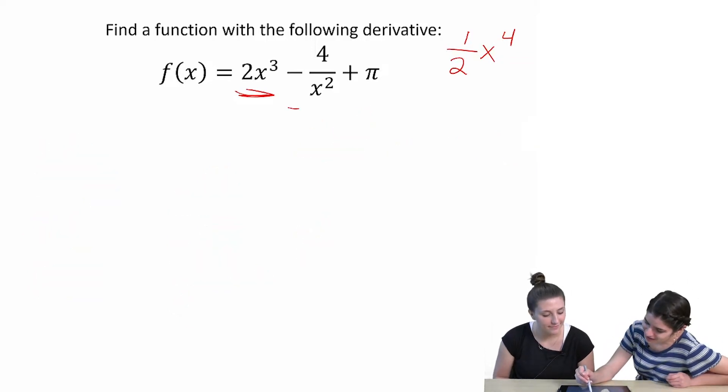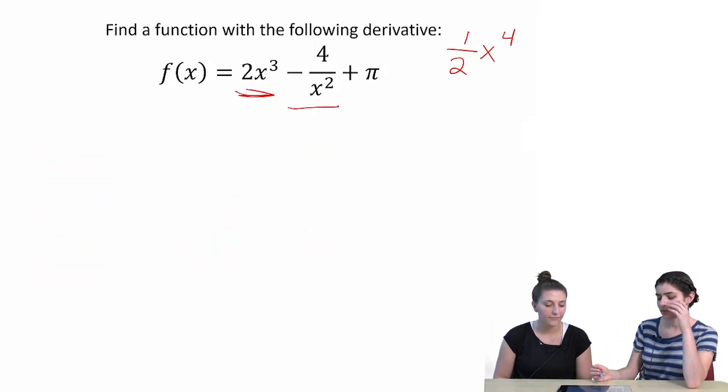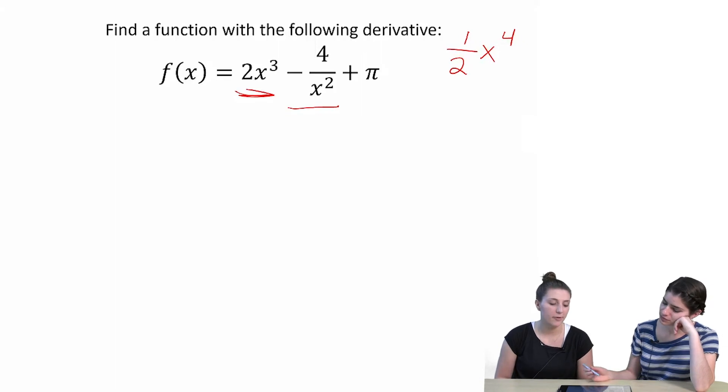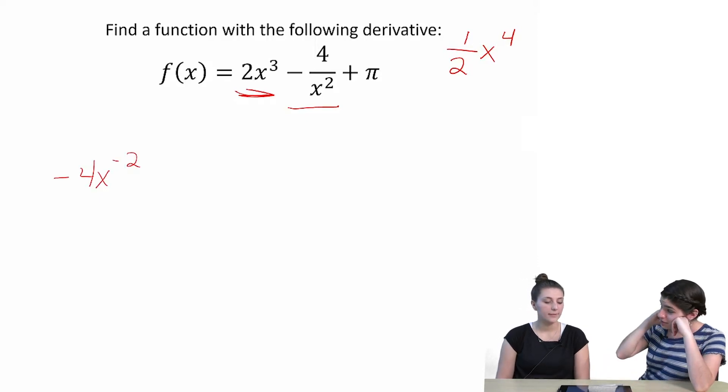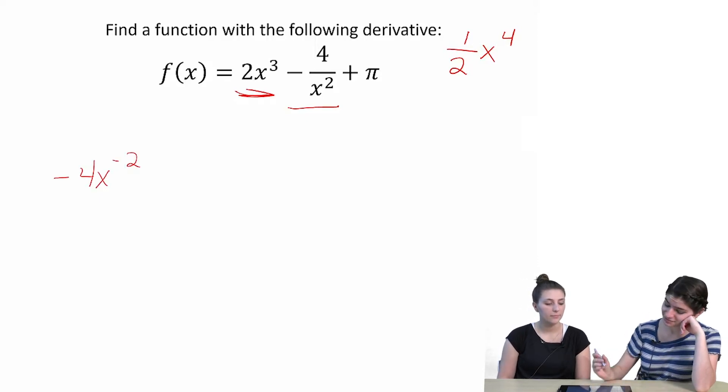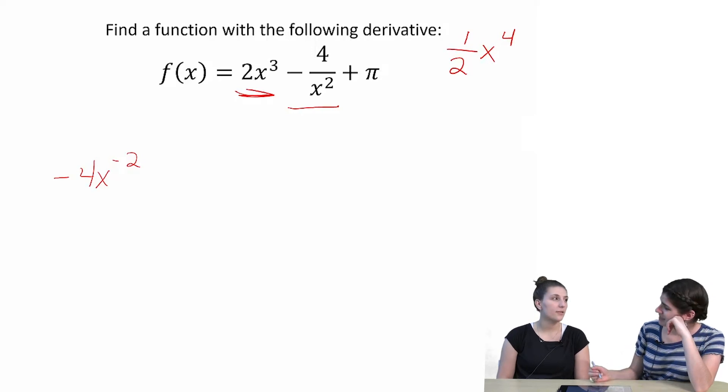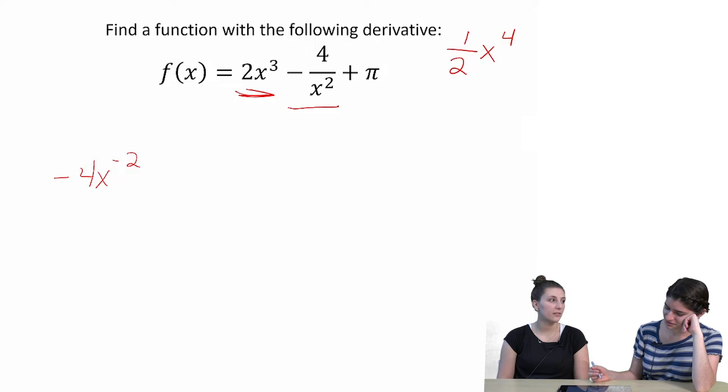Okay. So we have the first thing. Okay. So now let's worry about minus 4x squared. Okay. Or over x squared. So maybe when we rewrite that for negative 4x to the negative second.